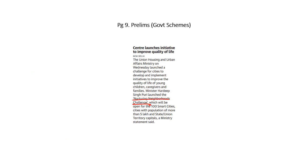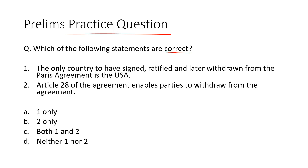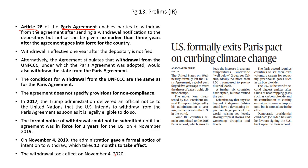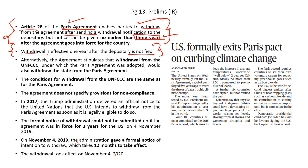This question has been asked because the Nurturing Neighborhoods Challenge has been mentioned in an article on page number 9. Now let's take up the next question. Which of the following statements are correct? The only country to have signed, ratified and later withdrawn from the Paris Agreement is the United States; and Article 28 of the Agreement enables parties to withdraw. Both statements are correct, so option C is the right answer. Article 28 of the Paris Agreement provides the withdrawal process. Once a country has signed and ratified the agreement, it has to remain in force for at least three years, during which a country cannot issue a withdrawal notice. After three years, the country has the right to withdraw by issuing a notice, and once the withdrawal notice is issued, the entire withdrawal process will take one more year. So basically, a country is bound to implement the Paris Agreement for at least four years.